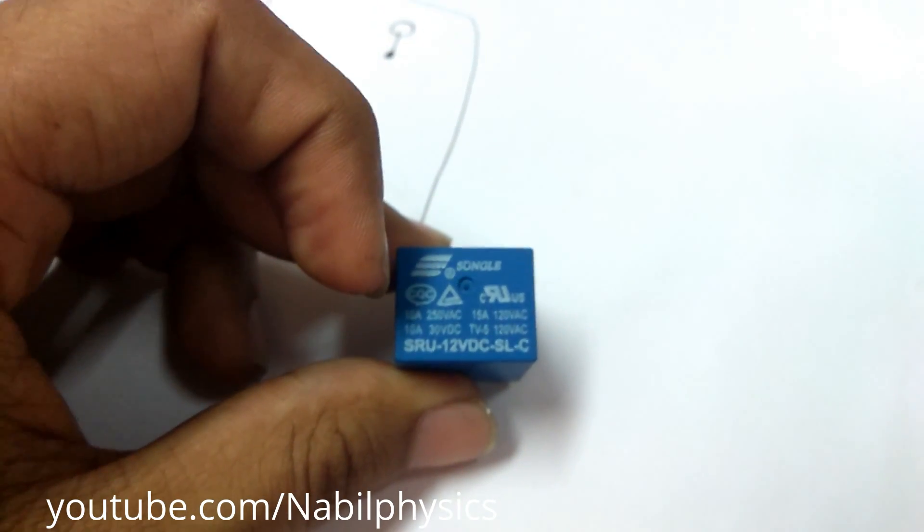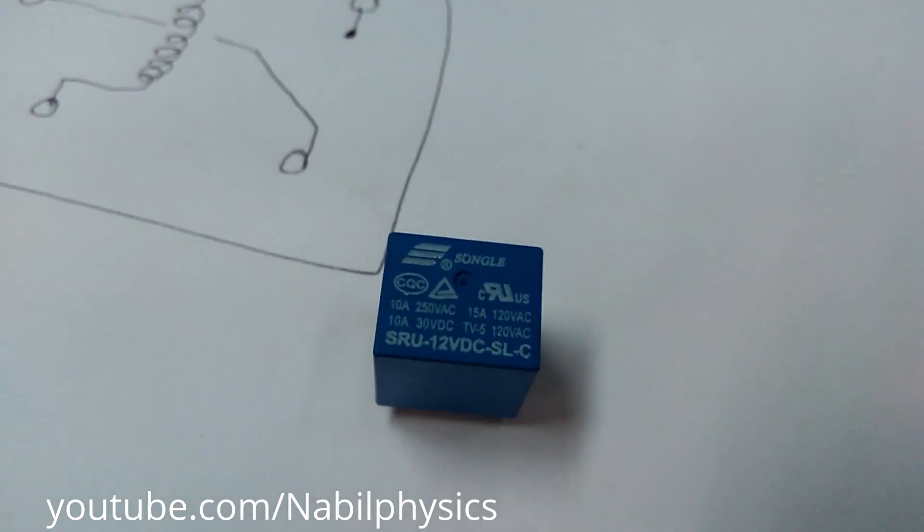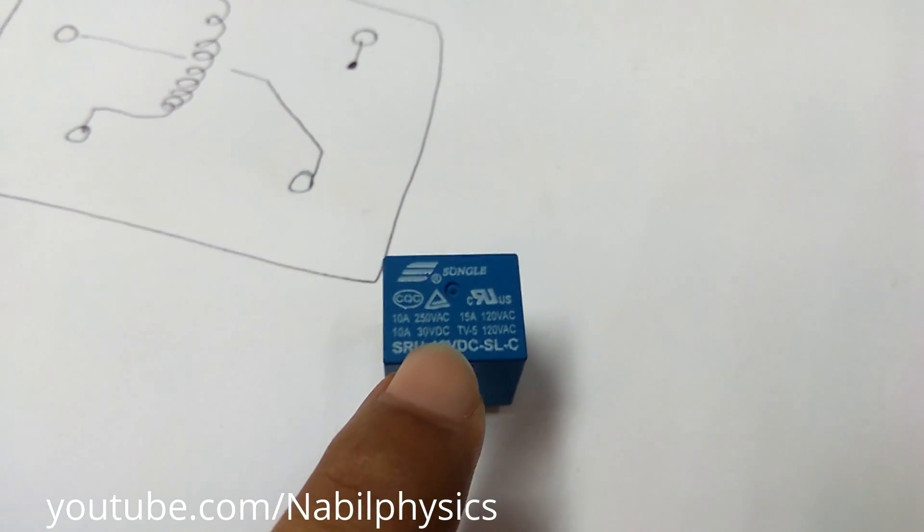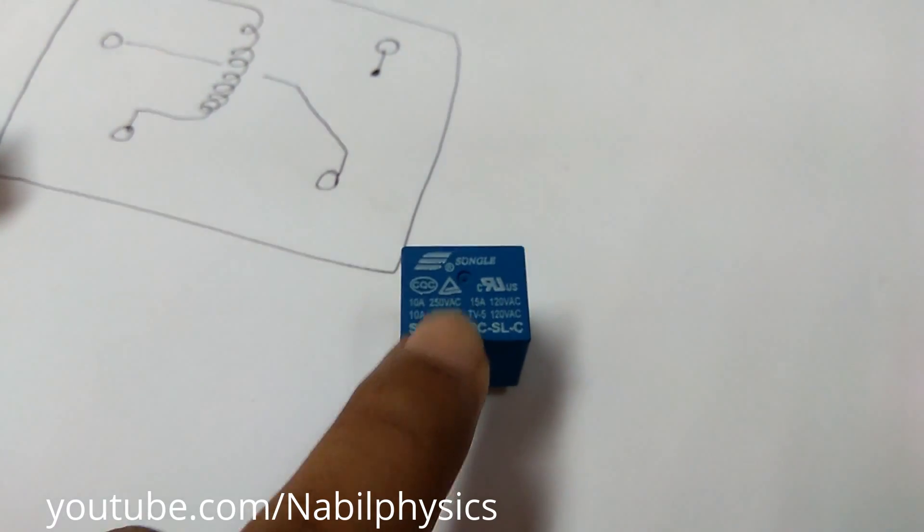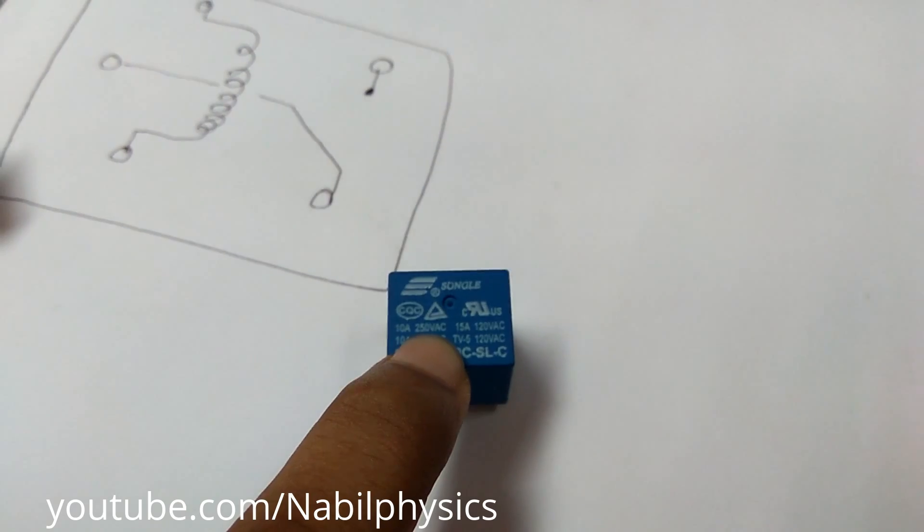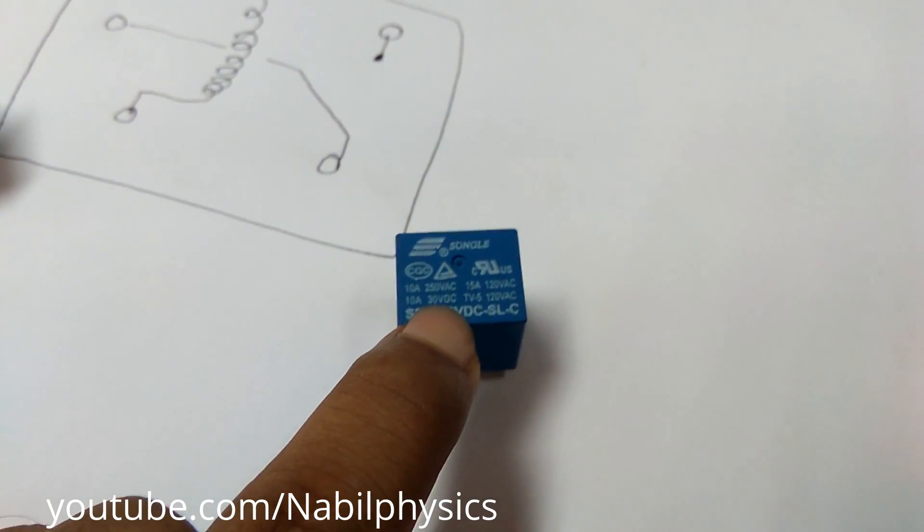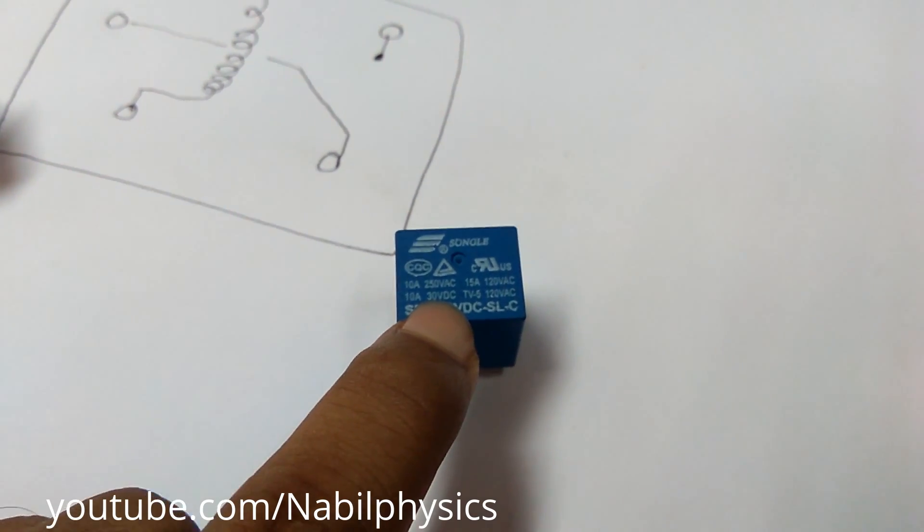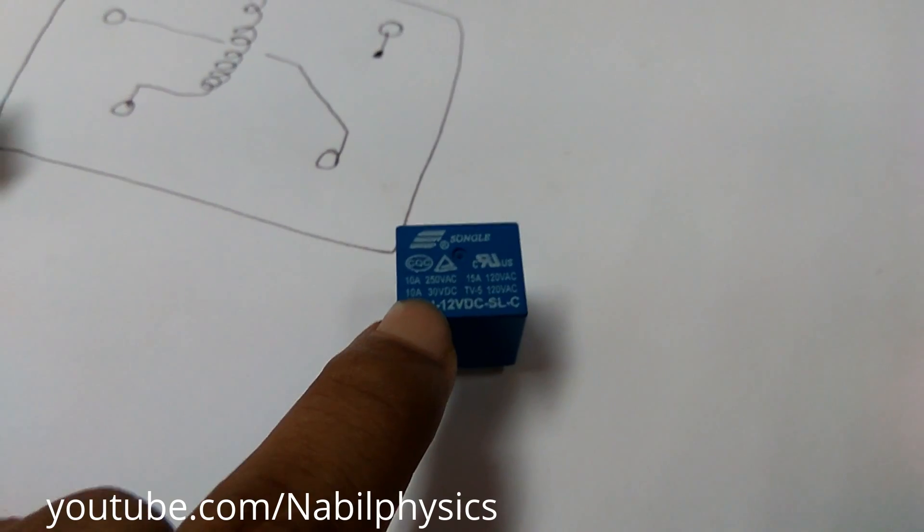Then you can operate a load which continuously consumes 10 ampere current. But if your device needs only 30 volt, then the upper one is AC and this is the specification for DC, then you can apply it at 30 volt load and your current consumption should be 10 ampere.